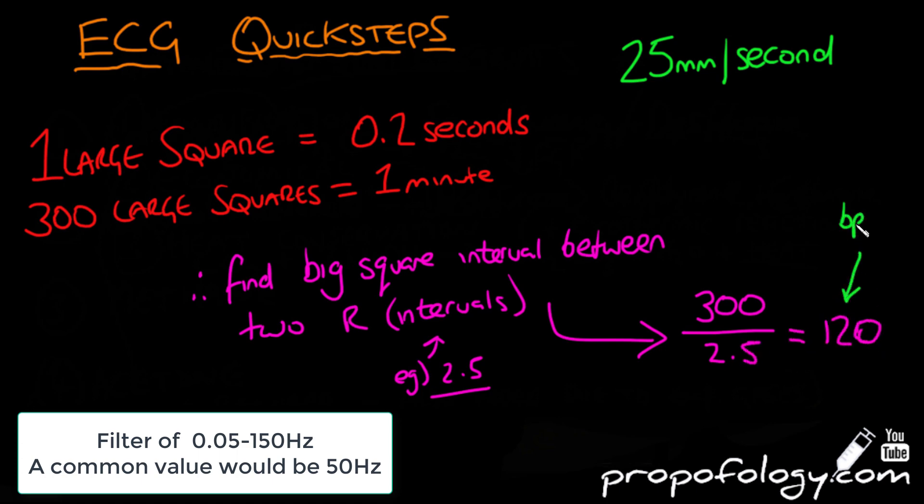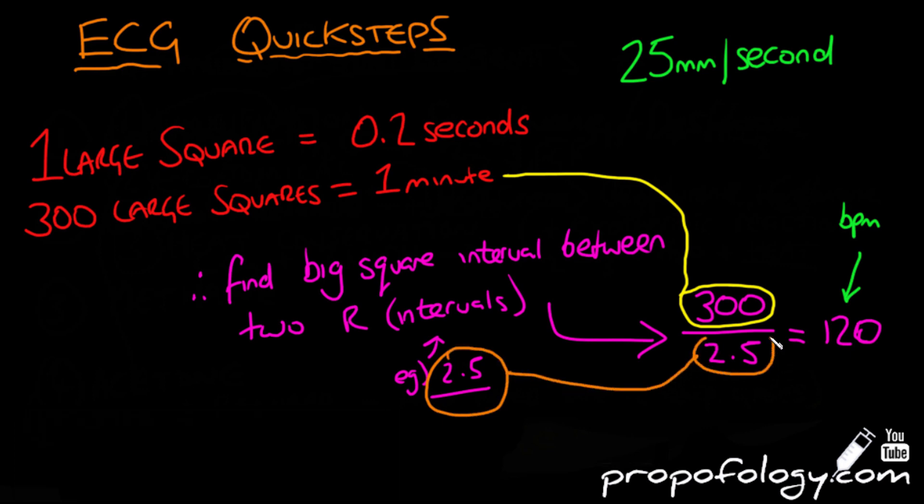So essentially you divide 300 by the big squares and that's how you calculate your beats per minute, because normally the ECGs that might be shown to you will not have the helpful heart rate printed on the top of them.